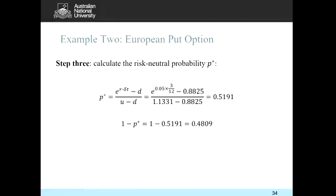Step three: calculate the risk-neutral probability. The formula is P* = (e^(0.05 × 3/12) − d) / (u − d). This gives P* = 51.91% probability of moving up, and 1 − P* = 48.09% probability of moving down.